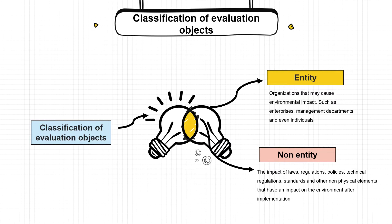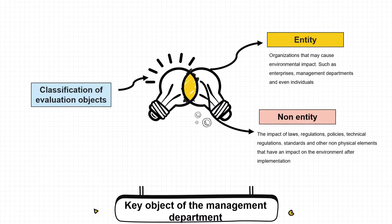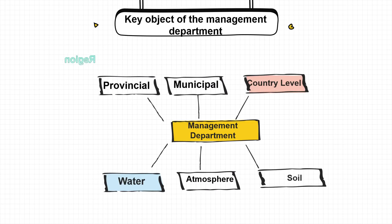The environment refers to water, atmosphere, soil, etc. Evaluation objects can also be divided into two categories: entity and non-entity. Entities are organizations that may have an impact on the environment, such as businesses, management, or even individuals. Intangibles refer to non-material elements such as laws, regulations, policies, technologies, and standards that have an impact on the environment.